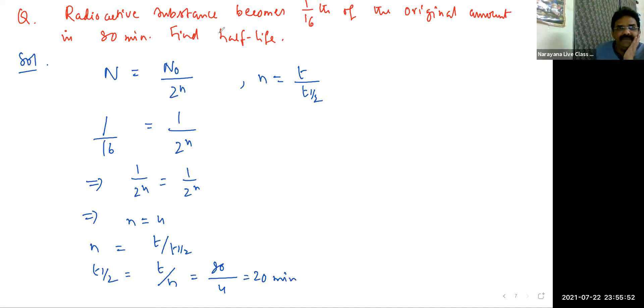You can also solve this in a simpler way. When given fractions, start with 1. After one half-life, 1 becomes 1/2. Then 1/2 becomes 1/4, then 1/8, and then 1/16 in successive half-lives.